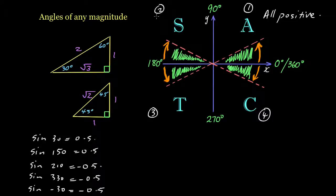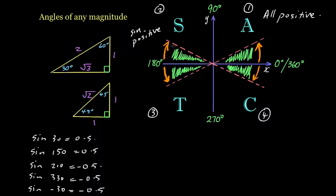The second quadrant has an S, which means sine is positive here. We had 150 degrees — 150 is between 90 and 180, that's quadrant 2, and we can see we got a positive result. So anything between 90 and 180 for sine will be positive, but if you enter cos or tan values in this quadrant you will get a negative result.